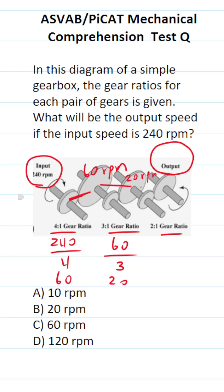And finally, this gear and this gear have a ratio of 2 to 1. This one's spinning at 20. To figure out how fast our output speed is, we're going to do 20 divided by 2, which is 10. So our output speed is 10 RPMs, which is answer choice A.